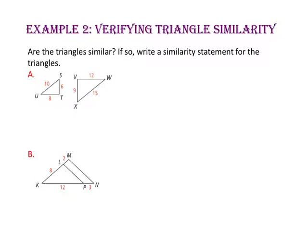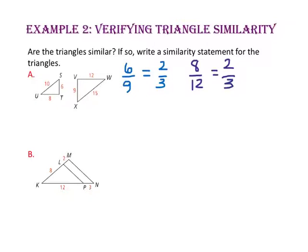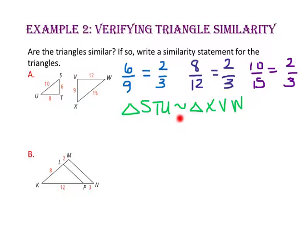In example 2, we will verify triangle similarity. Are the triangles similar? If so, write a similarity statement. Because we are given the three side lengths of each triangle, let's try to prove similarity by side-side-side similarity. Let's write the ratio of the shortest sides, 6 and 9; the medium-length sides, 8 and 12; and the longest sides, side SU which is 10 and side WX which is 15. Since the ratios of all three corresponding sides are equal — all 2 to 3 — the triangles are similar. Triangle STU is similar to triangle XVW.